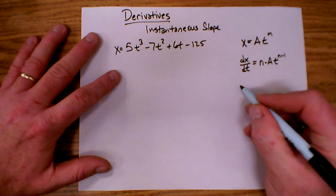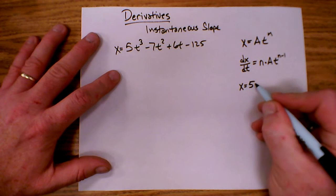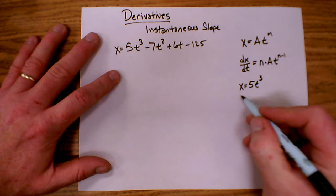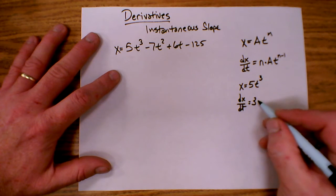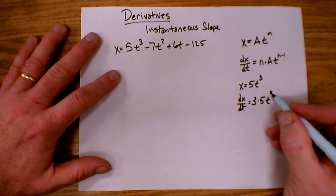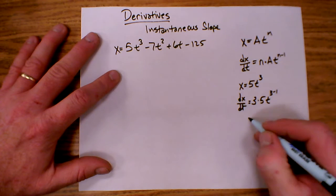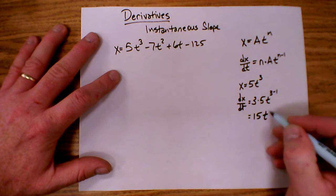So for example, if I have x equals 5t to the third power, then dx dt is equal to 3 times 5, t to the 3 minus 1. Or in other words, 15 t squared.